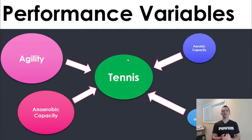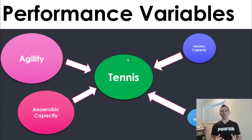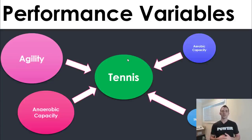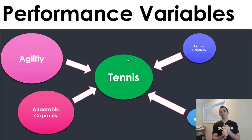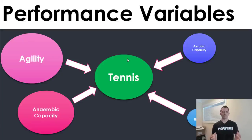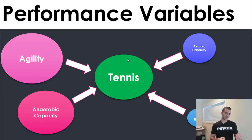Number two is performance variables. Let's take the sport of tennis. You want to think about all the performance variables associated with success in tennis — I've given four here, though there are many more. You want to do two things: figure out what's important, and how relatively important each one is. Agility gets the biggest bubble because it's incredibly important for tennis performance. Anaerobic capacity is very important too. Aerobic capacity matters but is somewhat less critical. Then grip strength — okay, it's somewhat important, but if you spent as much time training grip as agility with a tennis player, you'd probably lose your job pretty fast.